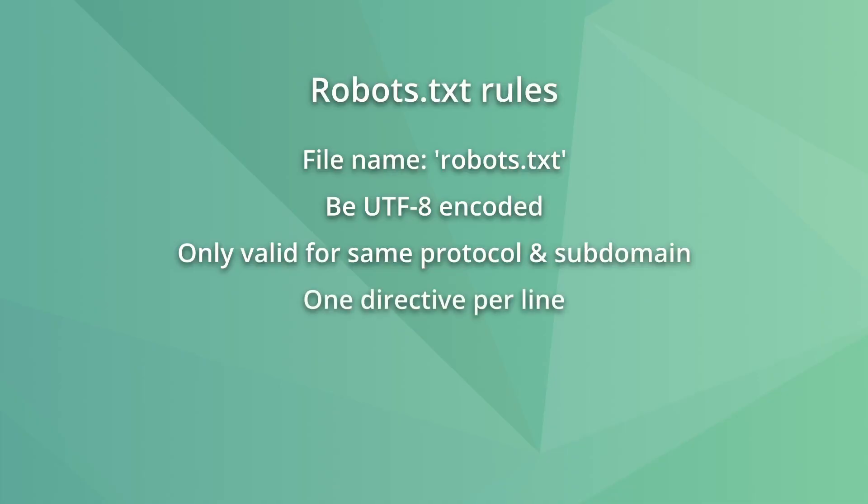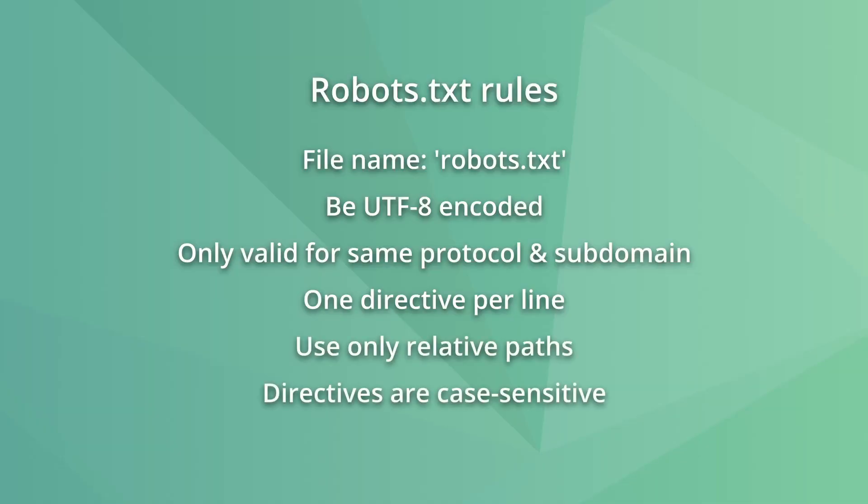When it comes to robots.txt rules, here are the essential things you must know. The file must be named robots.txt and located at the root of the domain. It must be UTF-8 encoded, valid only for the same protocol and domain, and must have only one directive per line. Use only relative paths, directives are case sensitive, and comments start with a hash and are ignored by crawlers. Crawlers usually process groups from top to bottom and only follow one group, so avoid targeting user agents more than once or using conflicting directives.